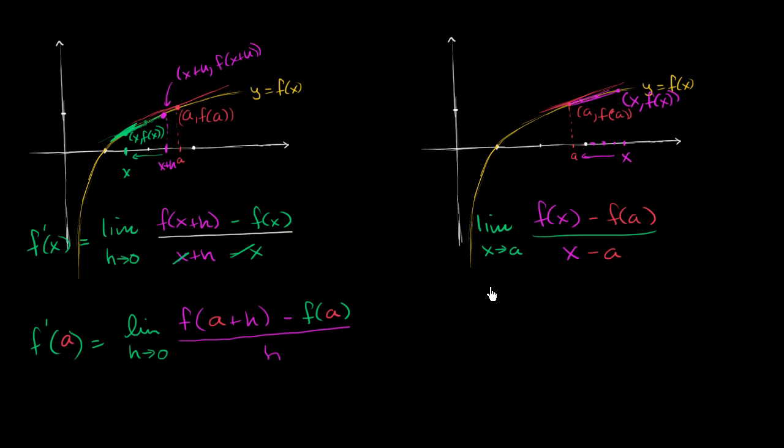Either way, we're doing the exact same thing. We're taking this, we have an expression for the slope of a secant line, and then we're bringing those x values of those points closer and closer together. So the slopes of those secant lines better and better approximate that slope of the tangent line. And at the limit, it does become the slope of the tangent line. That is the derivative, or that's the definition of the derivative.